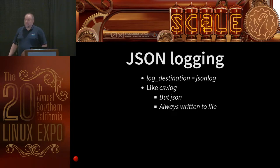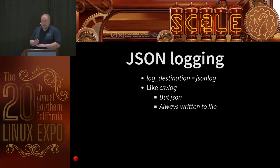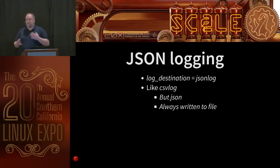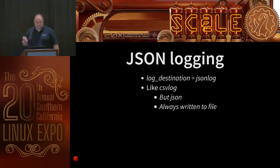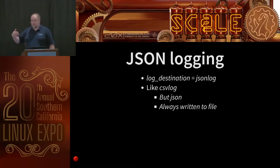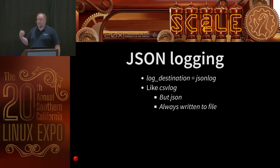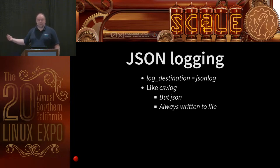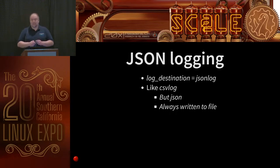We have a new JSON logging format. You set log_destination to jsonlog and you get log files in JSON format — similar to how CSV log works. It's overloading the destination and format into the same parameter, which is a bit silly, but it works. Many modern log management systems really like to ingest JSON since every log row has its own schema included, which can make your life a lot easier.